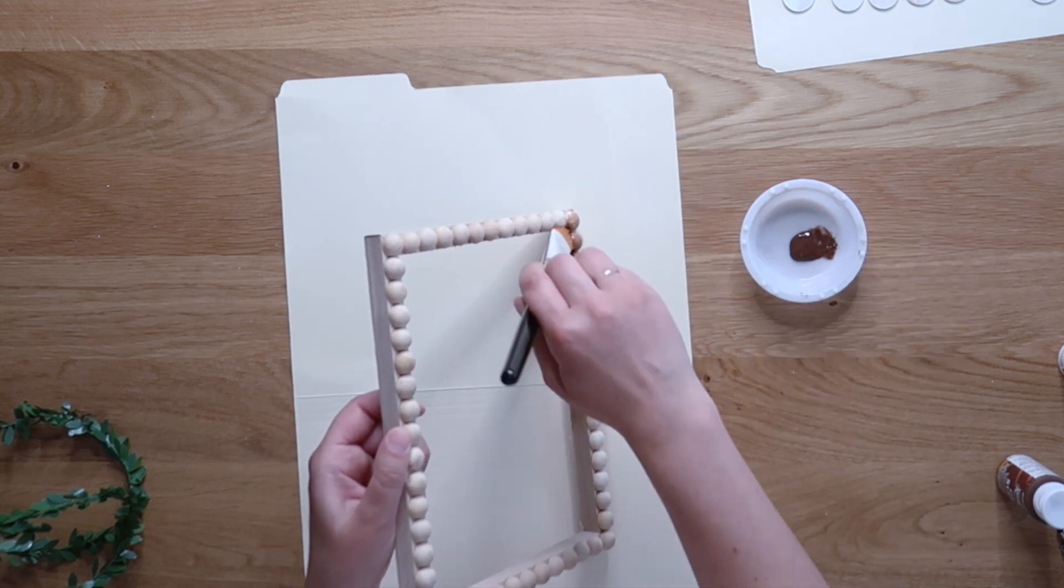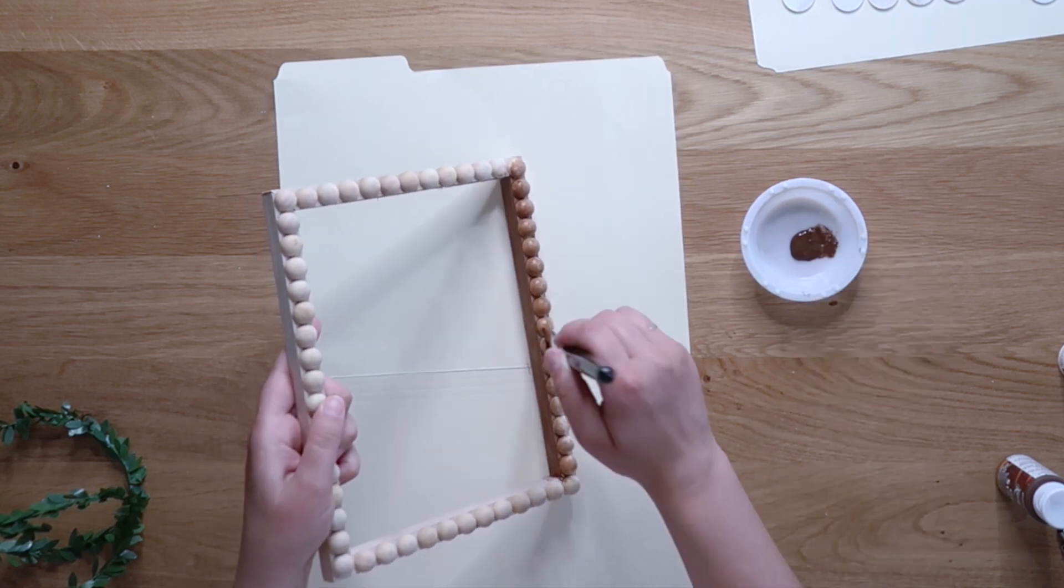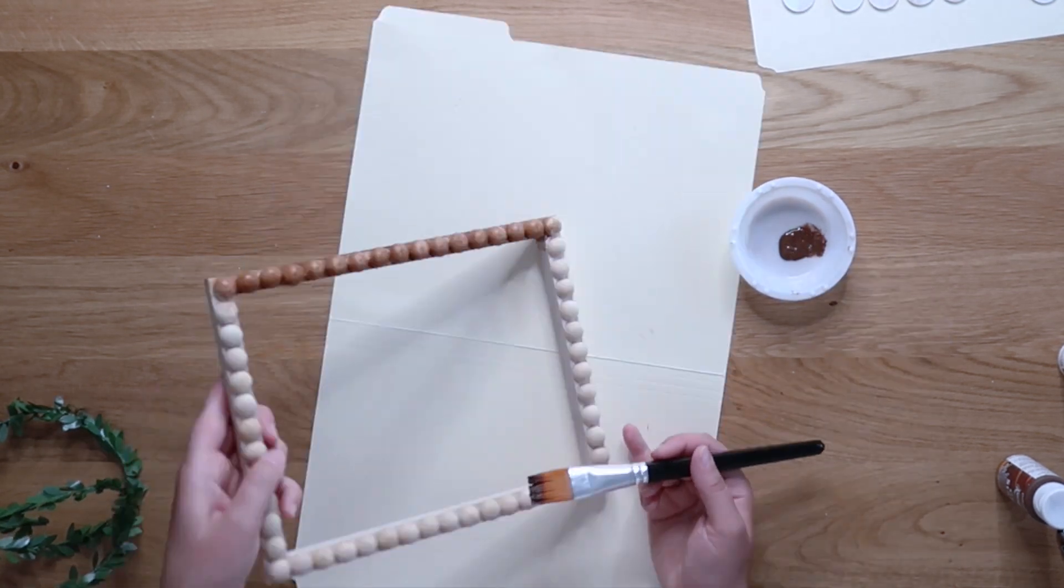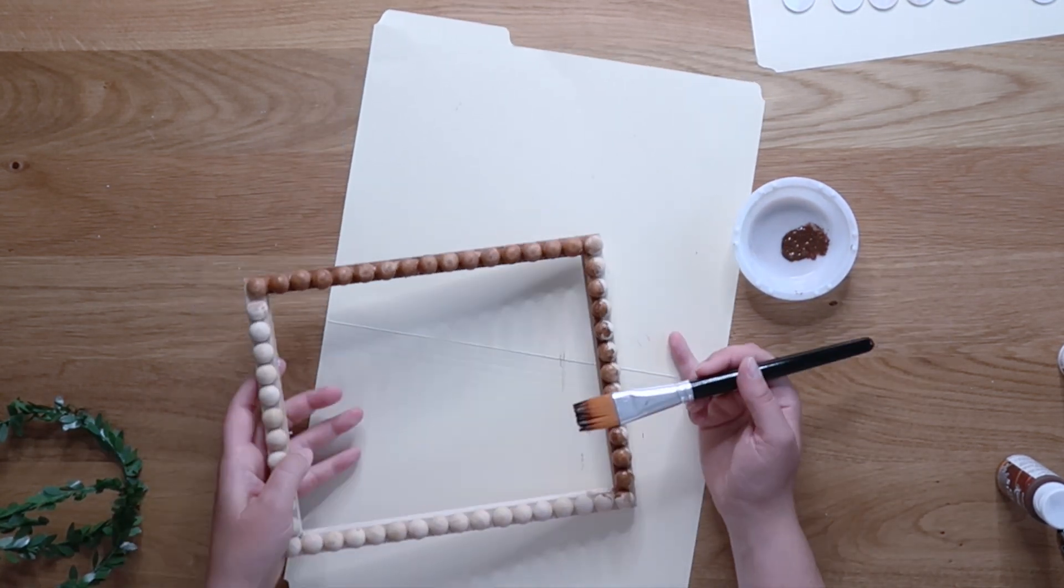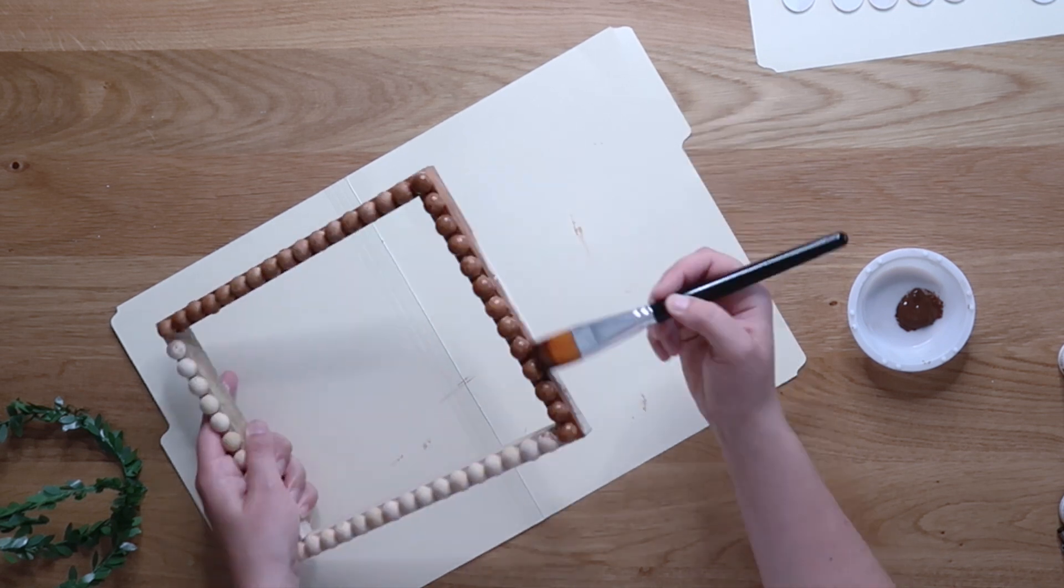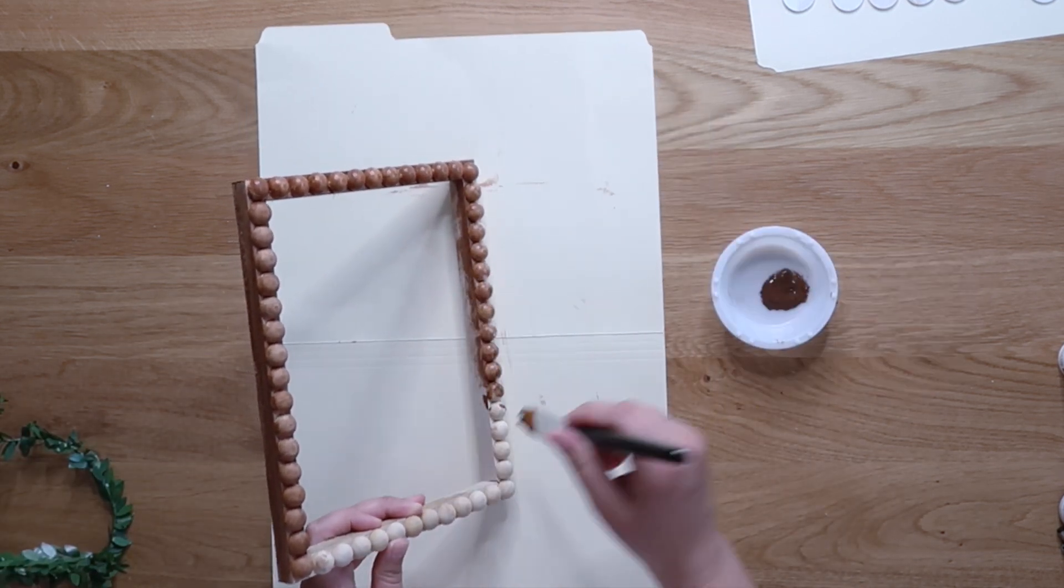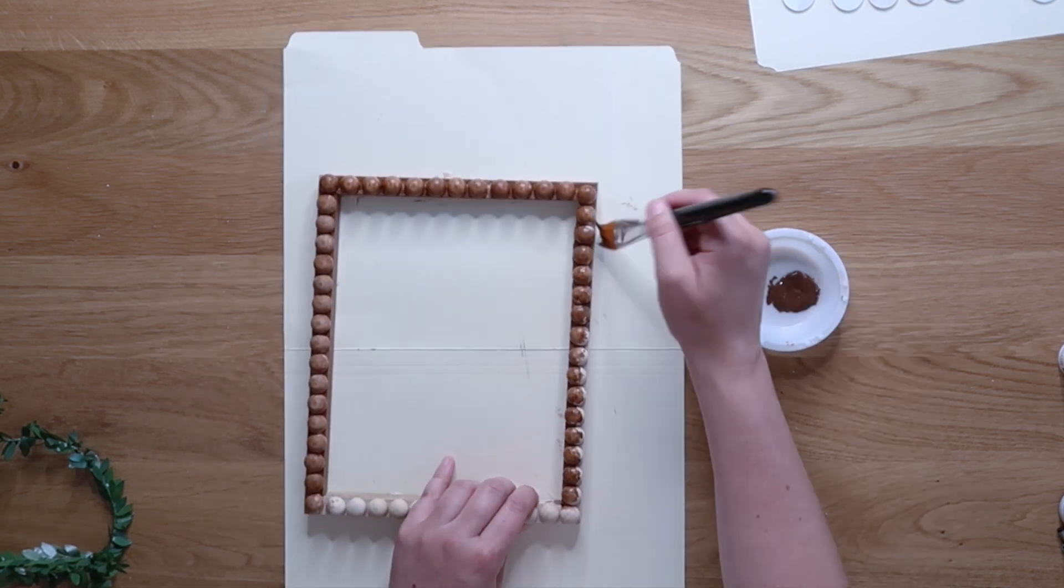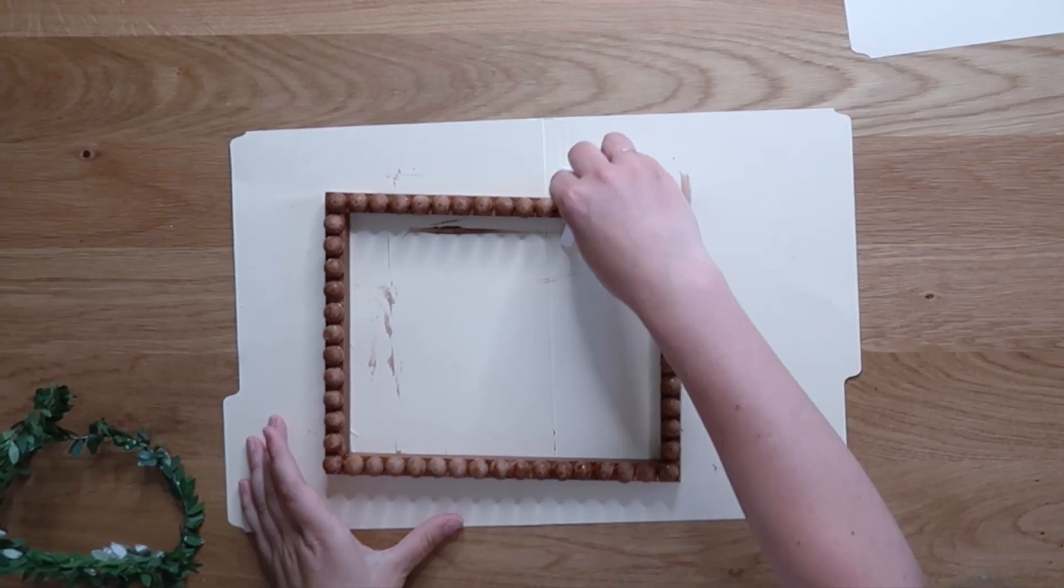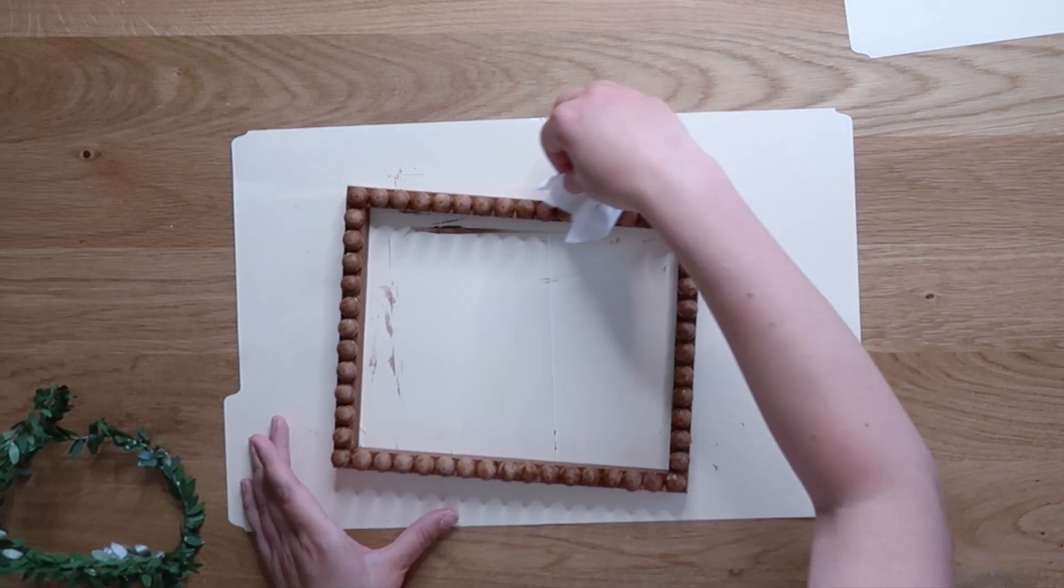I bought like a 20 pack of them on Amazon. I use them for everything. And just get in all those nooks and crannies and get everything like a nice even coat. Don't try to make it like a smooth coat and not have any of the stain pool, but just go all the way around the frame. And then you can go back like with a tissue or a paper towel and just dab away any excess stain.